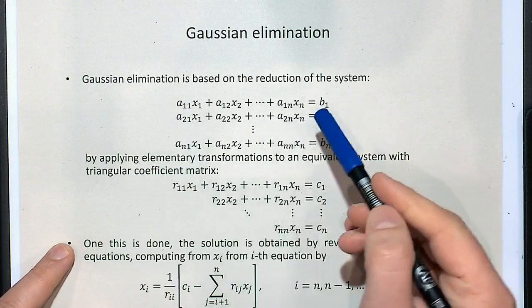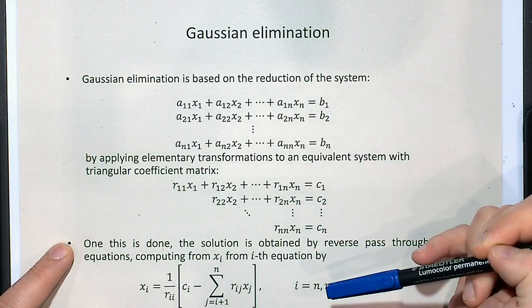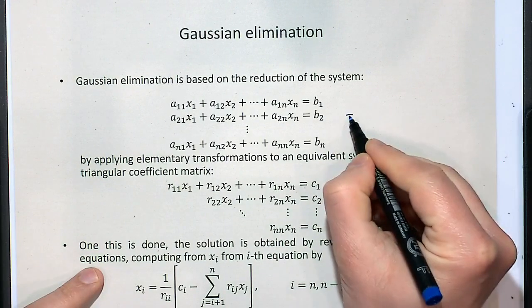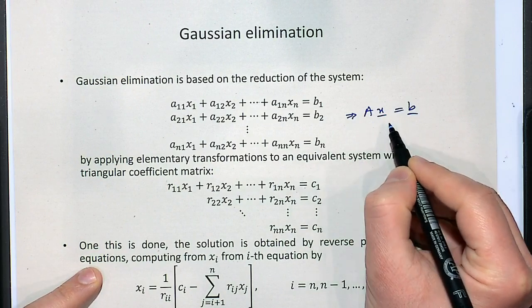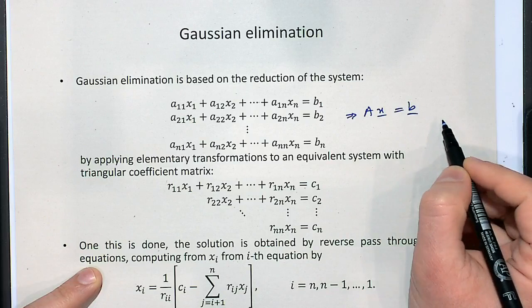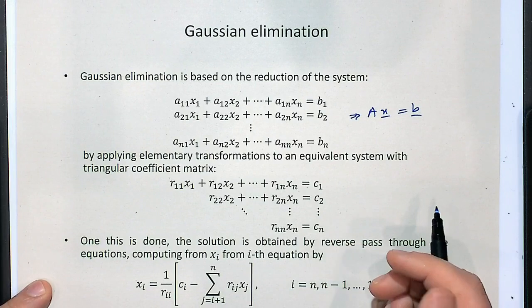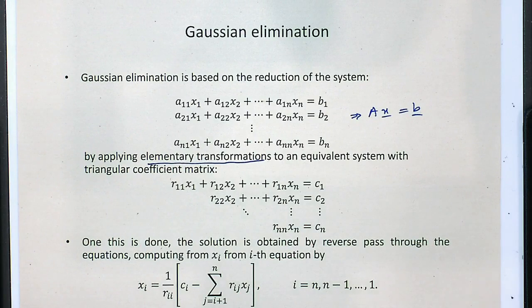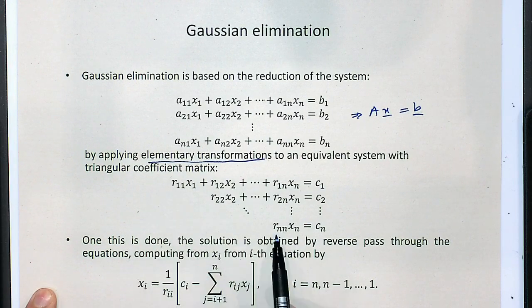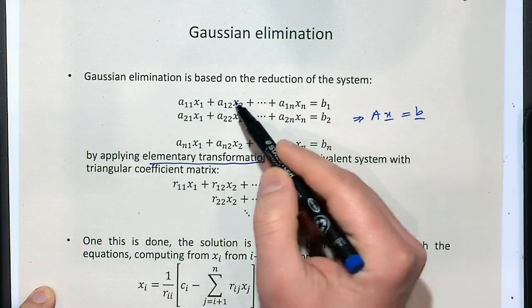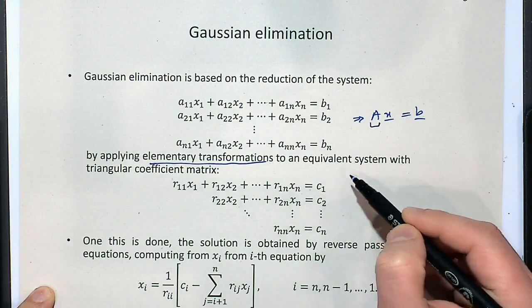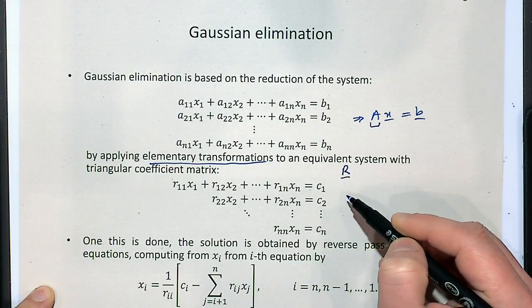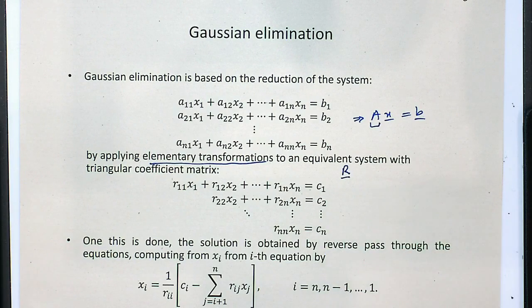We have N unknowns x1 to xN and N equations, so we can write this as Ax equals B, where A is N-by-N, x is the solution vector (N-by-1), and B is N-by-1, the right-hand side vector. In Gaussian elimination, we apply elementary transformations — multiplying rows by scalars and adding them to other rows — for the purpose of getting a triangular matrix on the left-hand side. Why do we need a triangular matrix?